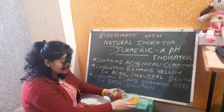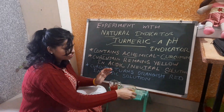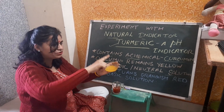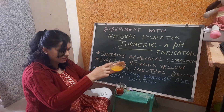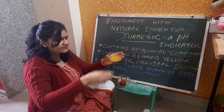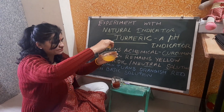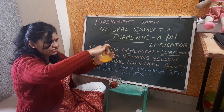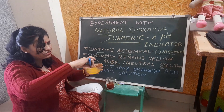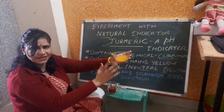This curcumin remains yellow in acidic or neutral solution. As a neutral solution, you can take water. When you mix the turmeric powder in water, it remains yellow. And if you want to make this solution acidic, you can add some lemon juice — like this. There will be no change in the color. There is no change when we add lemon juice into the turmeric solution — it remains the same yellow.